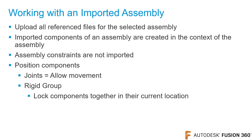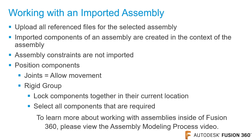A rigid group locks all the selected components in their current location. In a rigid group, you can select as many components as you require. To learn more about working with assemblies inside of Fusion 360, please view the assembly modeling process video.